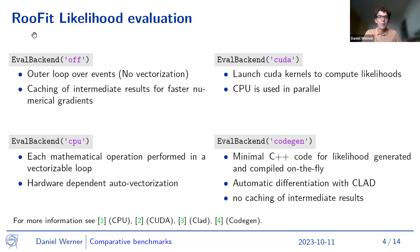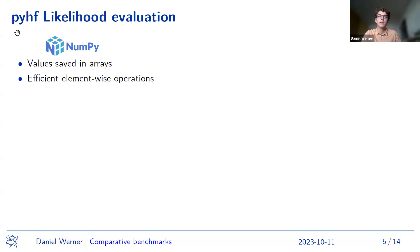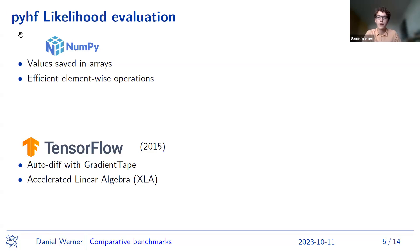So pyhf also has backends and in pyhf it's usually different Python libraries. Like by default, you would often use NumPy where all the values are saved in arrays, which are in NumPy arrays, which adds a kind of vectorization to the computation. As you can run all computations on NumPy arrays and with NumPy methods. And another backend or possible package to use is TensorFlow, the machine learning framework originally. And as a machine learning framework, it deals a lot with computing gradients. So here gradient tape can be used to make automatic differentiation. And also TensorFlow has this accelerated linear algebra, which can optimize the computation graph so that it runs faster.